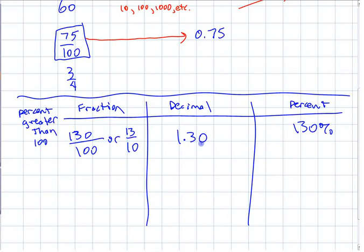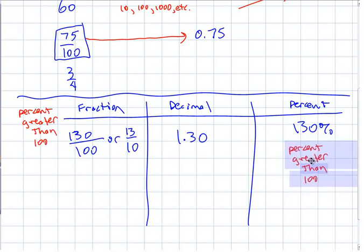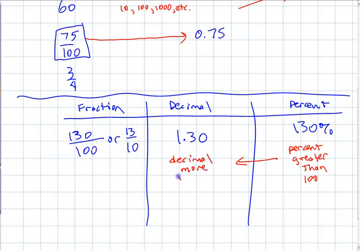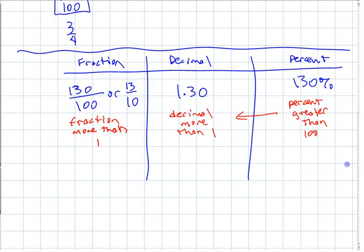What you should put down is a note: if the percent is greater than 100, that means decimal more than one — a decimal that's more than one. Percent greater than 100 means a decimal more than one, and it means a fraction that's more than one — a fraction where the top number is bigger than the bottom number. Percents greater than 100 means the decimal is more than one and the fraction is more than one.